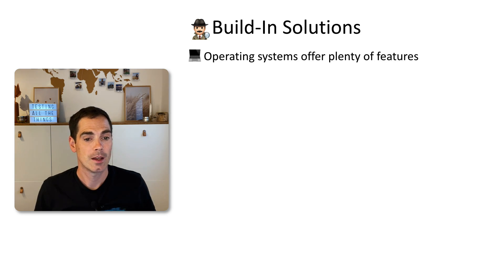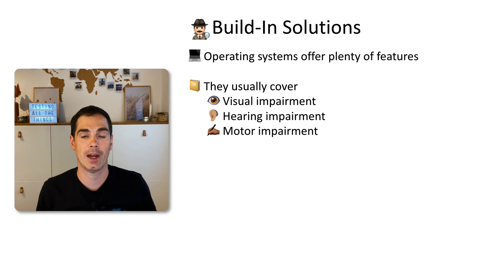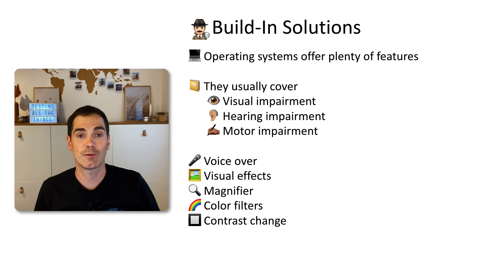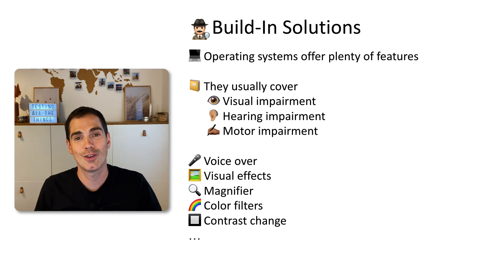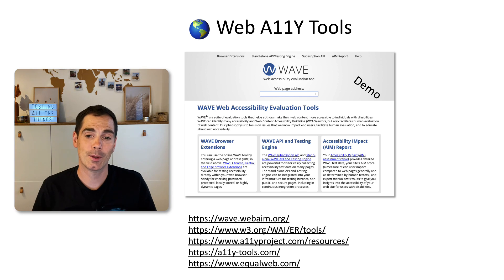Built-in operating system features usually cover visual impairment, hearing impairment, and motor or motion impairments. Features include voiceover, visual effects, magnifying tools, color filters, contrast change, and more. If you'd like, pause the video now and go to your operating system settings to find what accessibility functionality is already there. Here you get a quick overview on both the Microsoft and Mac side.